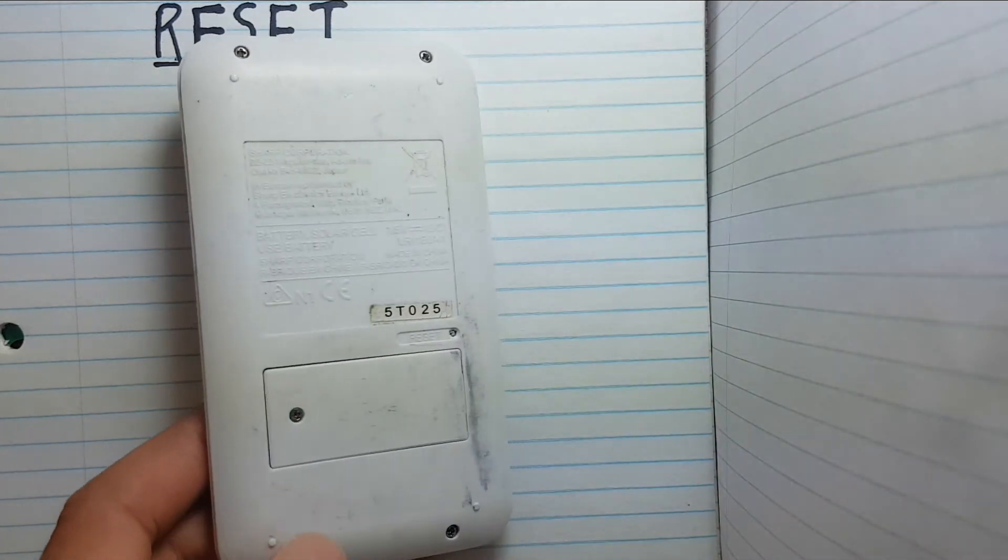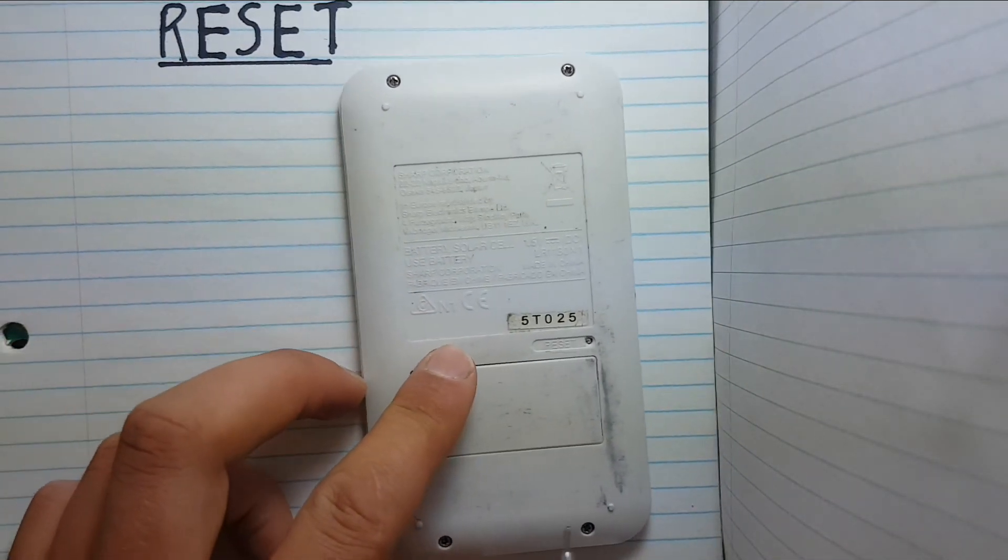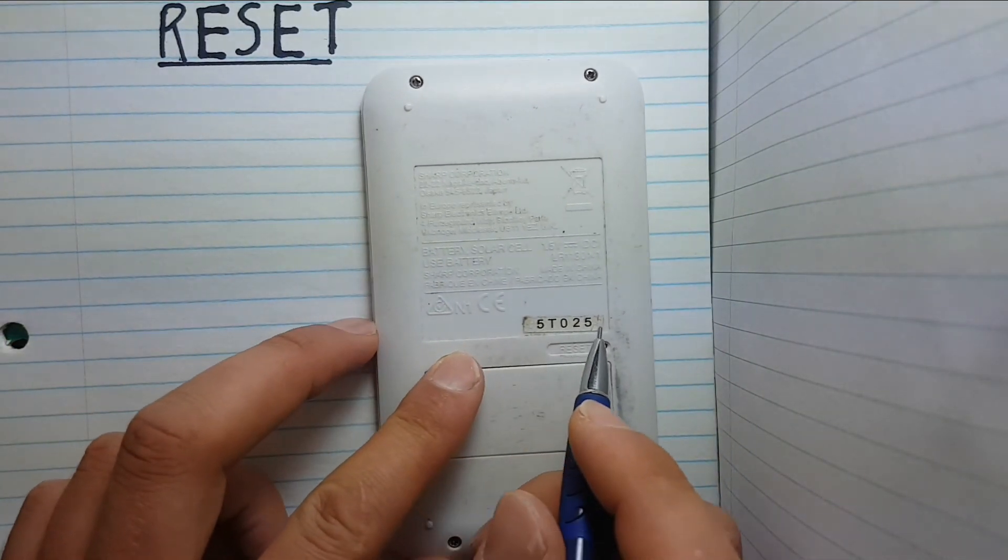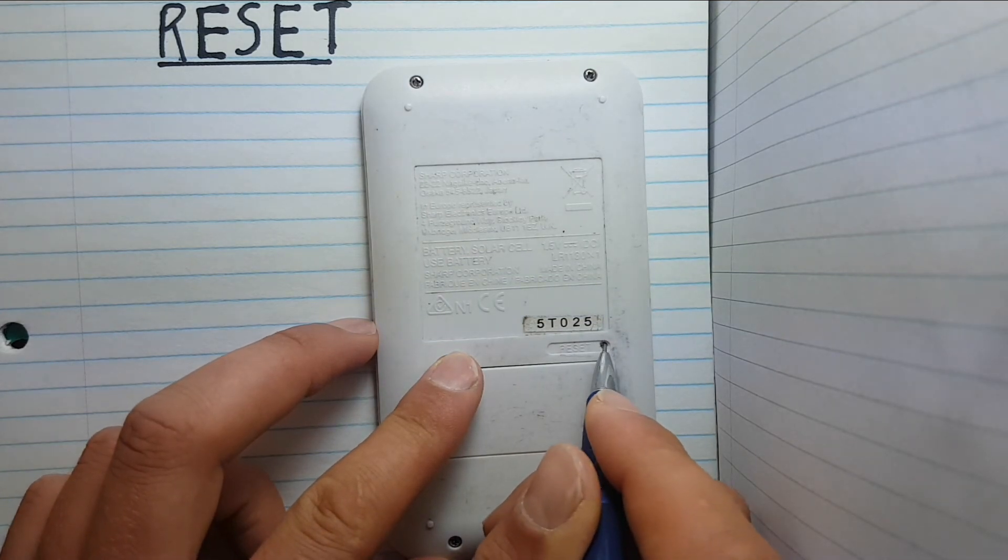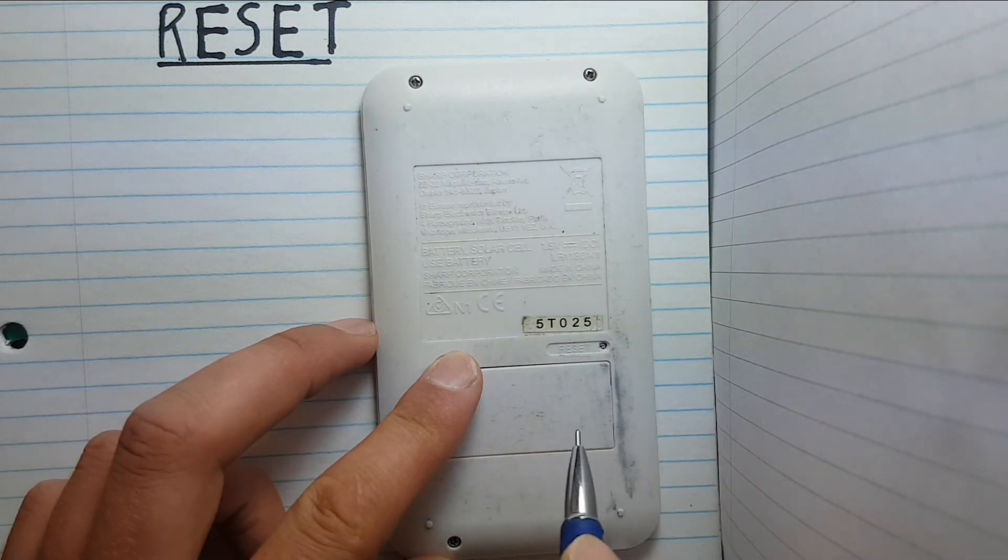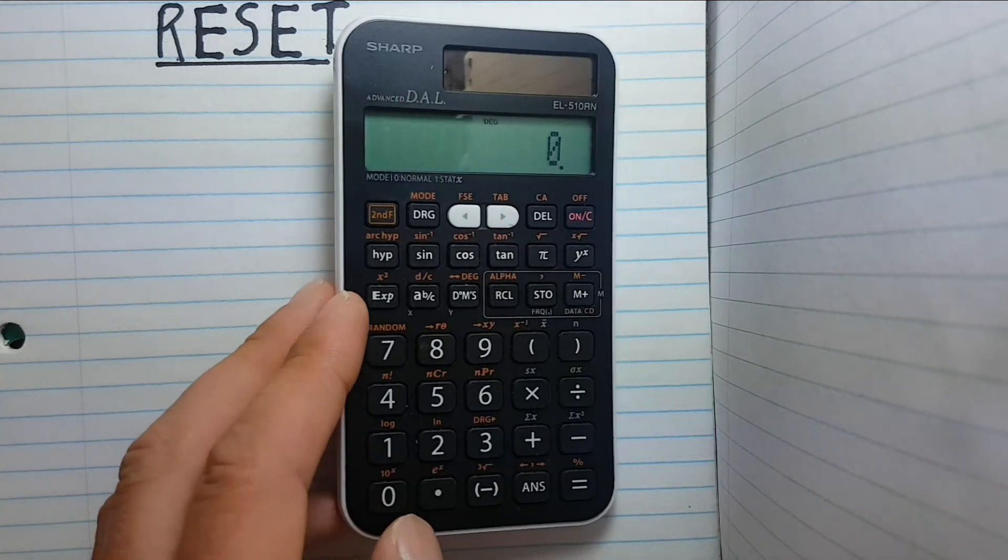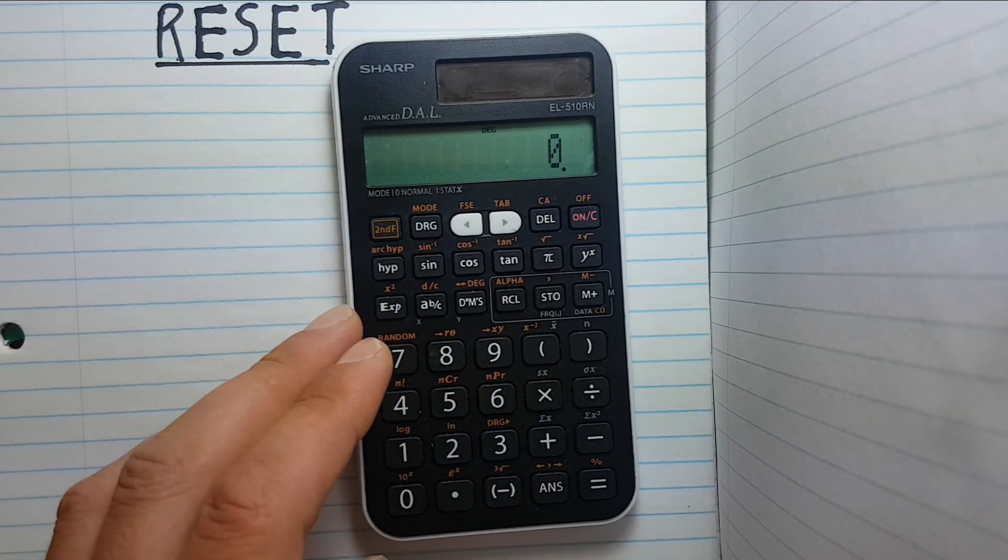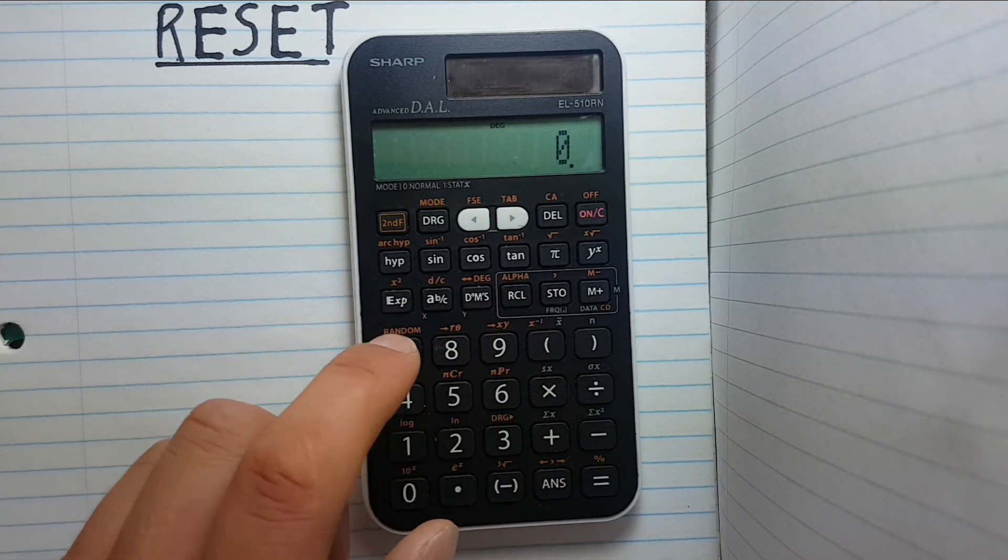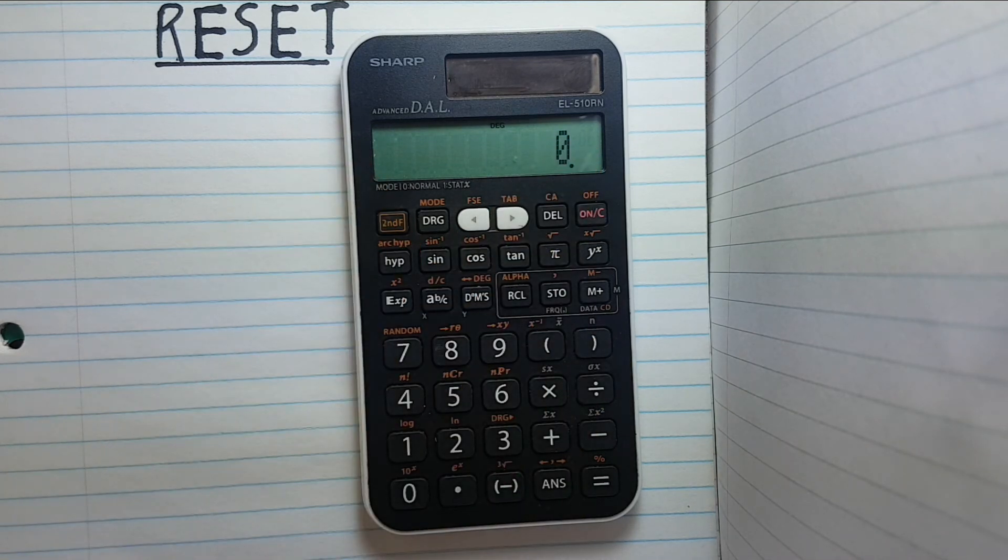Turn it over. Press the reset button. Feel it go in. Release it. Flip it over. And to confirm this works we can try recall X. And you see we have nothing popping up. So this calculator has been reset.